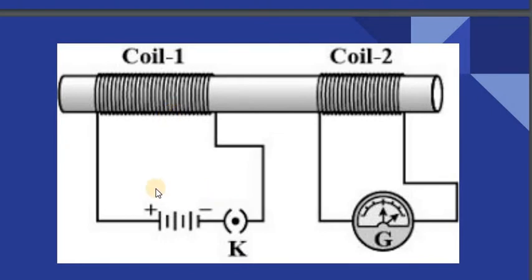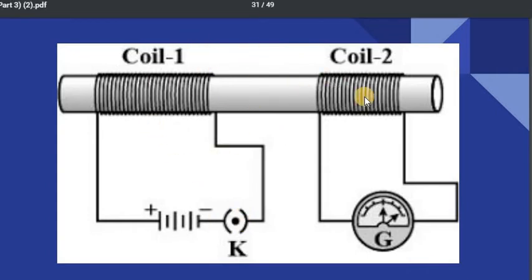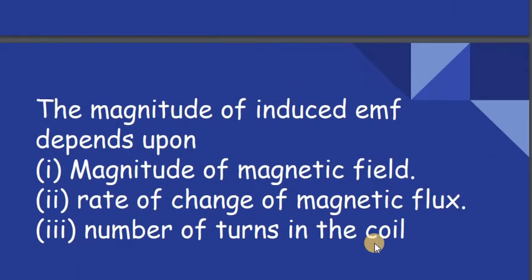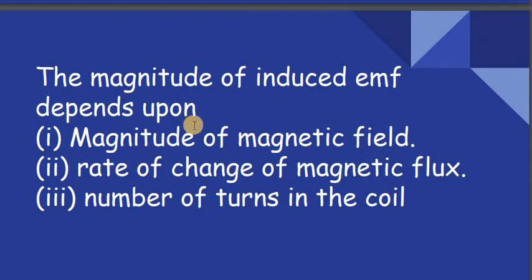When the first coil is connected with a DC supply, there will not be much change since the magnetic flux does not change. However, if you switch it on and off repeatedly, there will be a change in the magnetic flux which induces current in the second coil, causing deflection in the galvanometer. The magnitude of the induced EMF depends on the magnitude of the magnetic field, the rate of change of magnetic flux, and the number of turns in the coil.